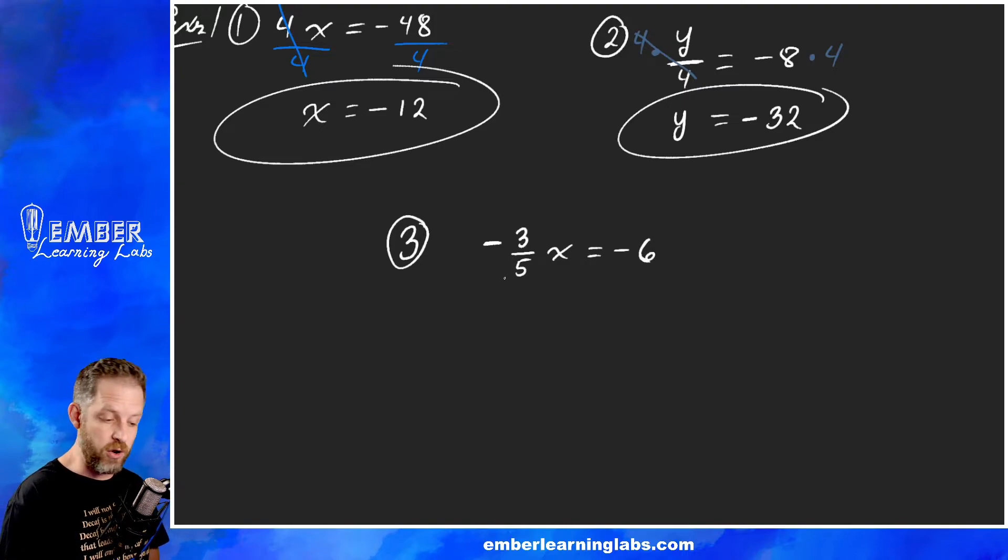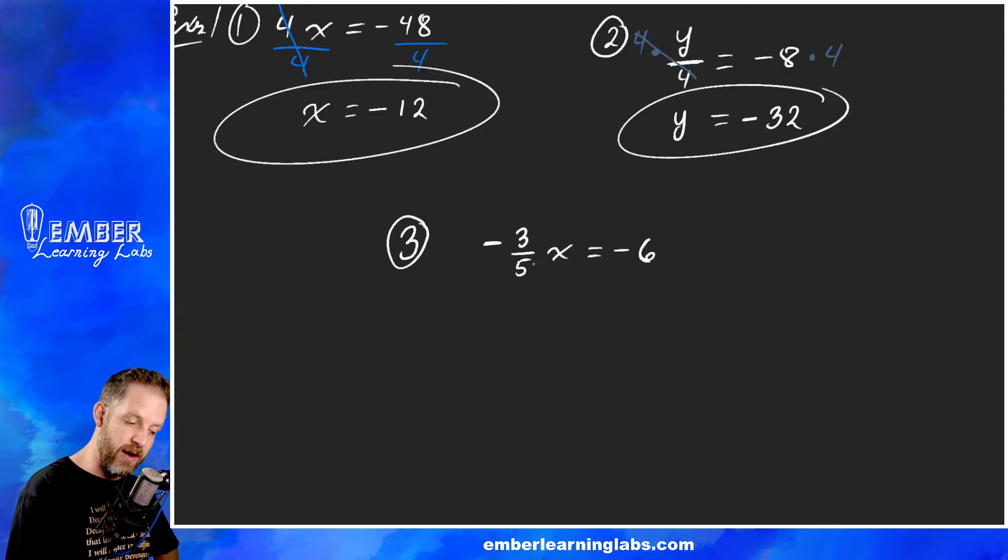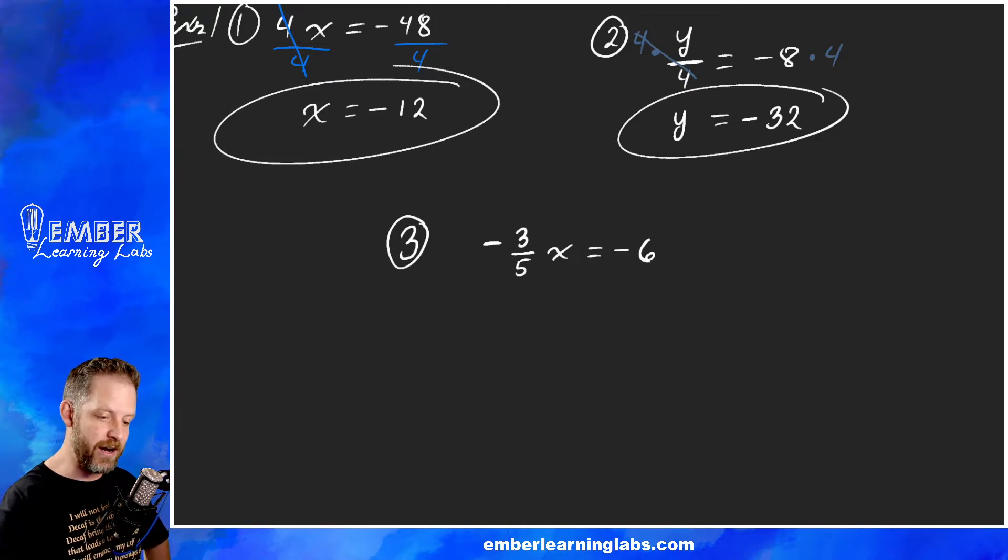Negative three-fifths x equals negative six. All right, so we've got a number next to a variable. Fractions are just numbers, they're not magic, they're not anything crazy. Fractions are just numbers, don't freak out. So if a number is right next to a variable that's multiplication. How do we get rid of multiplication? Well, we divide. Now how do we divide fractions?